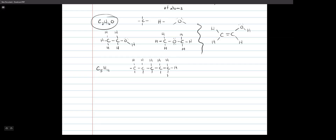We're going to learn an easier way to draw this in Chapter 2 — much easier to draw, maybe a little harder to understand at first. What's another way we could arrange these? Instead of five in a row, we could do four in a row.